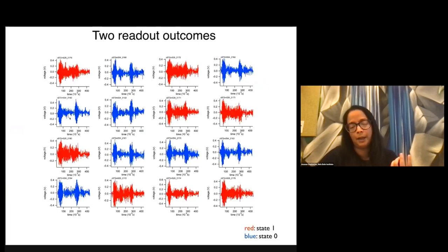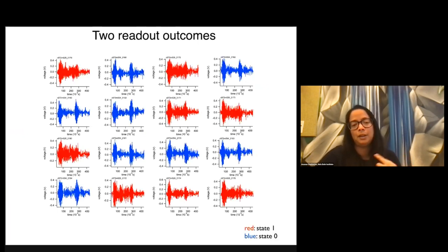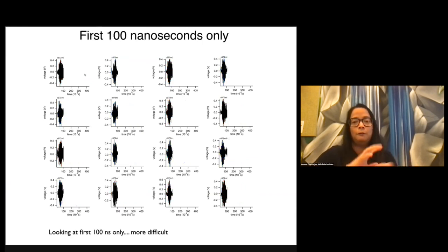So if I color them, you may maybe be able to see that the one seems to have a little bit of a blob here while the 0 doesn't. But this is about microseconds of data. If you want to do this very fast before your qubit decoheres away, the first 100 nanoseconds are much harder for the human eye, for instance, to recognize.